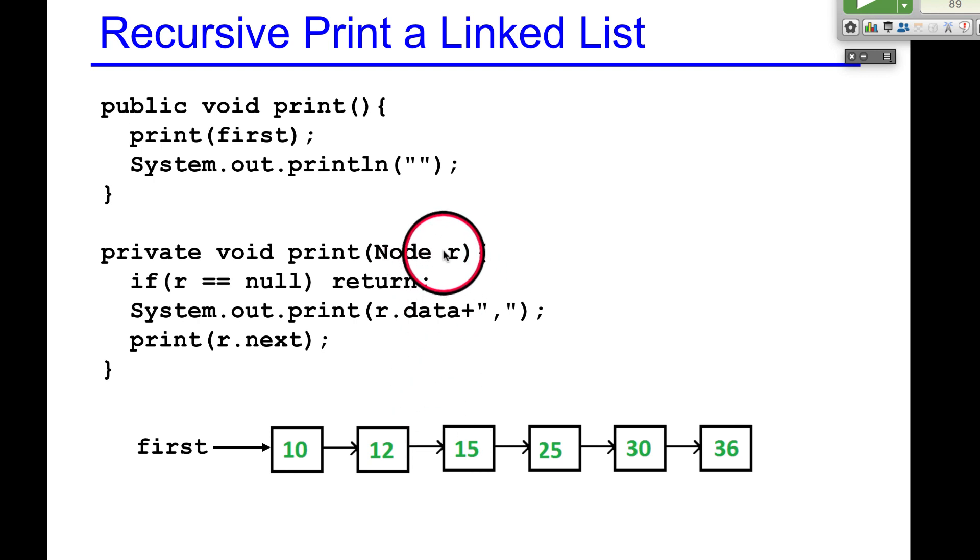If it's null, you have to do this. This is my base case. If it's null, there's nothing you can do. Just return. If it's not null, print the data. I'm going to print 10. So let's run this code.